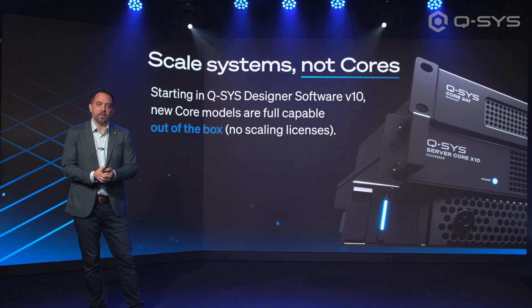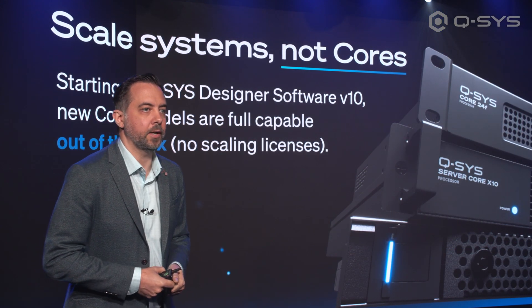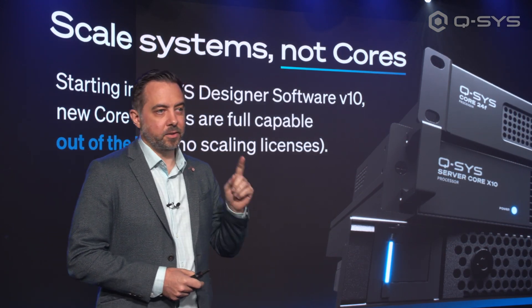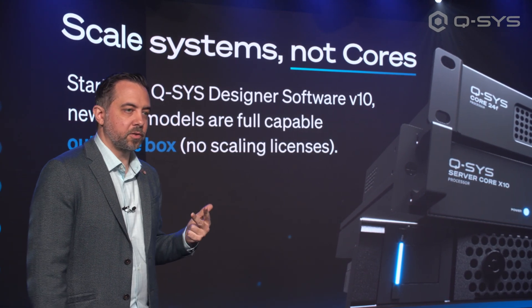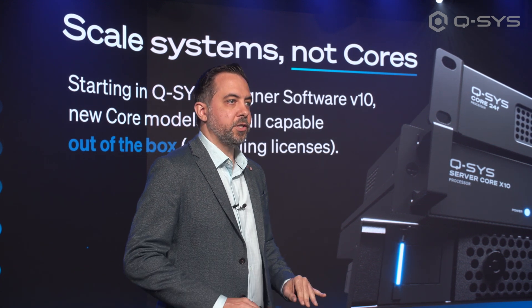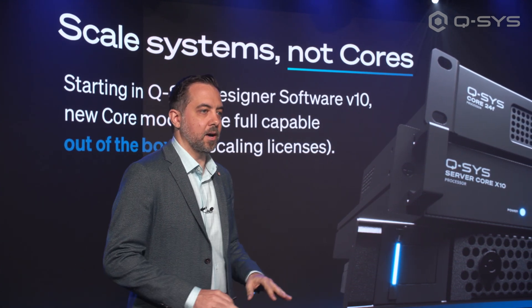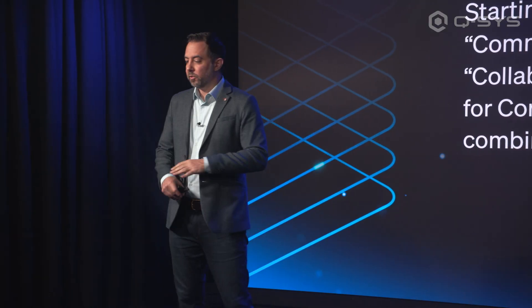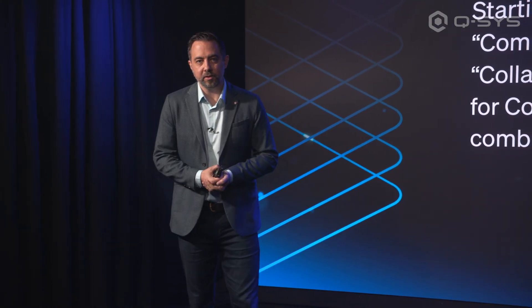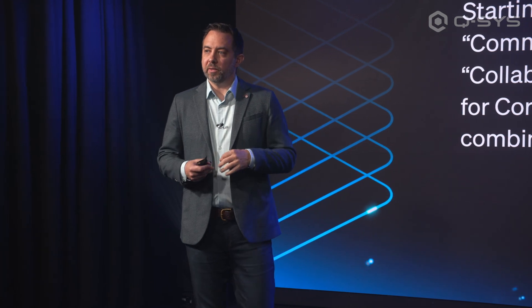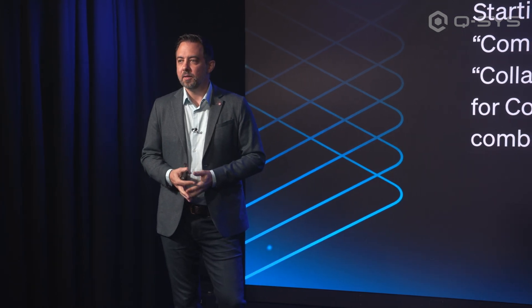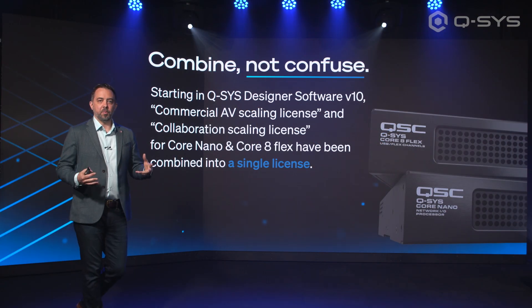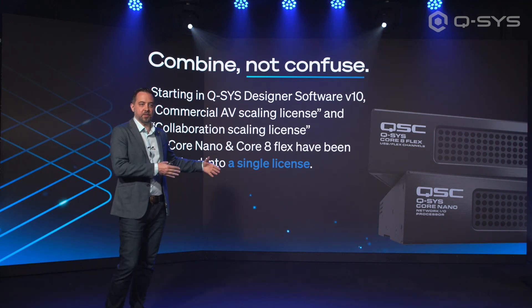The big announcement today is we are not going to be offering scaling licenses for any of the new cores we've announced. Core 24F, Server Core X10, and Server Core X20R will always ship fully capable out of the box with no license required. To further simplify our licensing portfolio, we're going to combine those two scaling licenses into just a single scaling license for Core Nano and Core 8Flex, and that single license will have the same capabilities as both of the previous licenses combined.